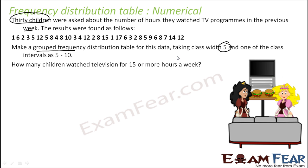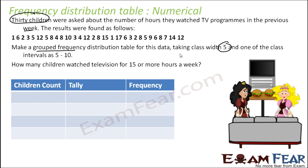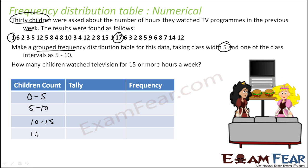The class width is 5. Based on that we have to tell how many children actually watched for 15 or more hours in that last week. The minimum value we see is 1 and the maximum is 70. The range given is 5 to 10, so we can start: 0 to 5, 5 to 10, 10 to 15, and 15 to 20.